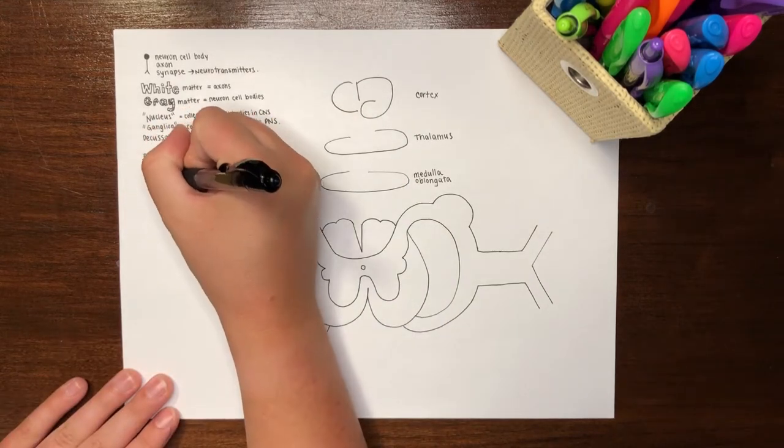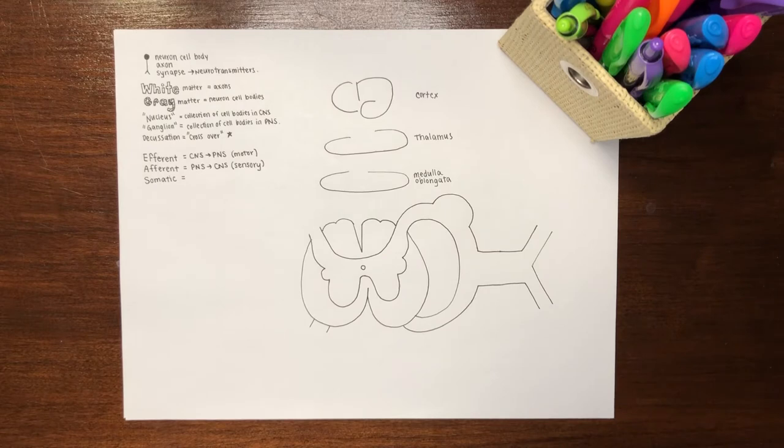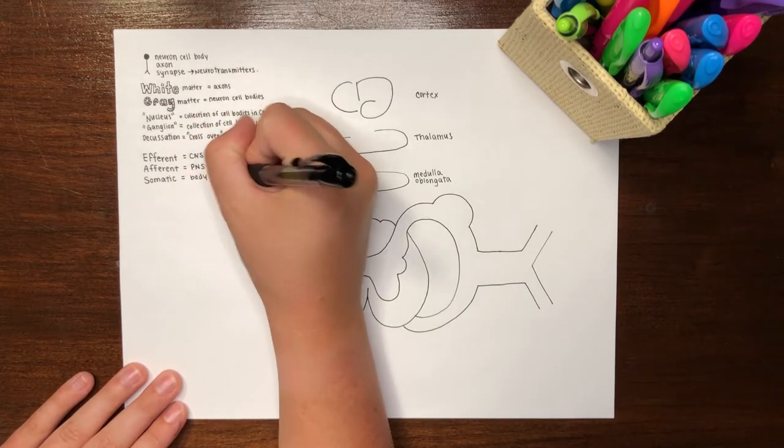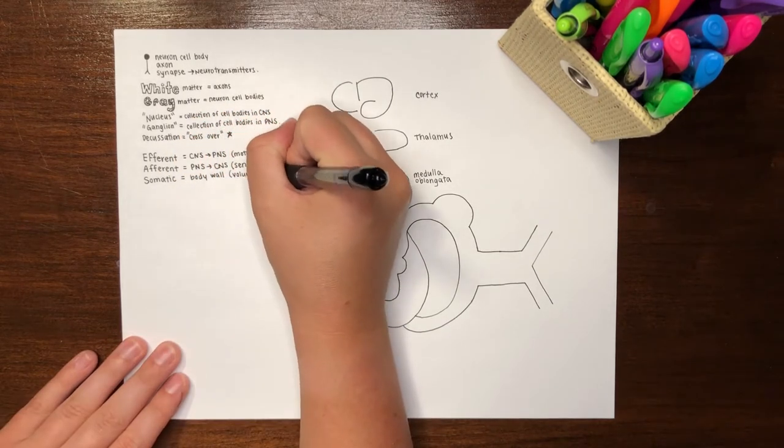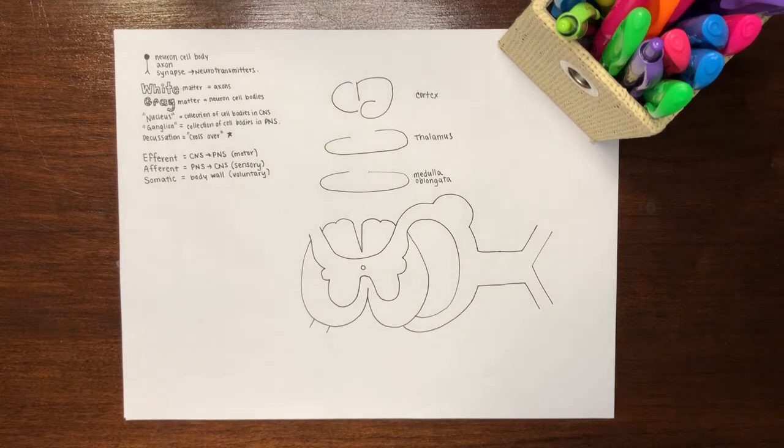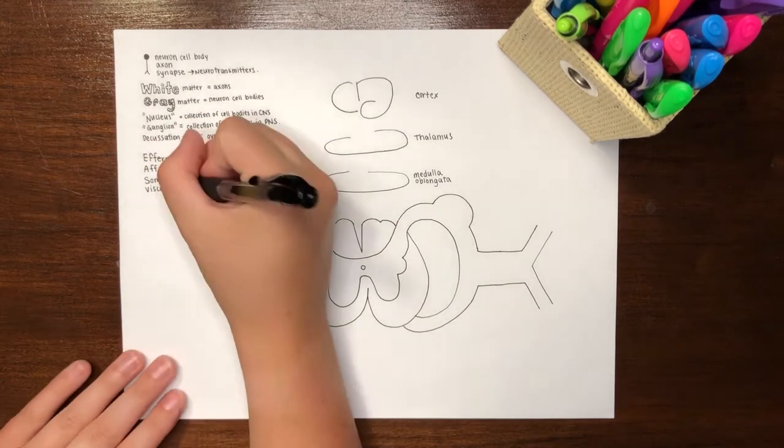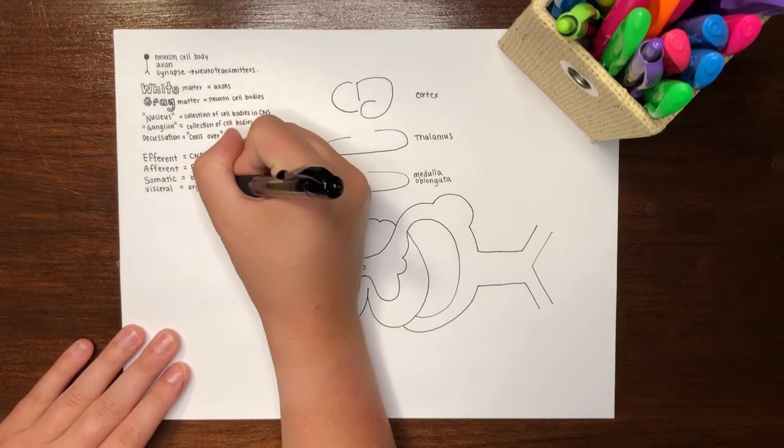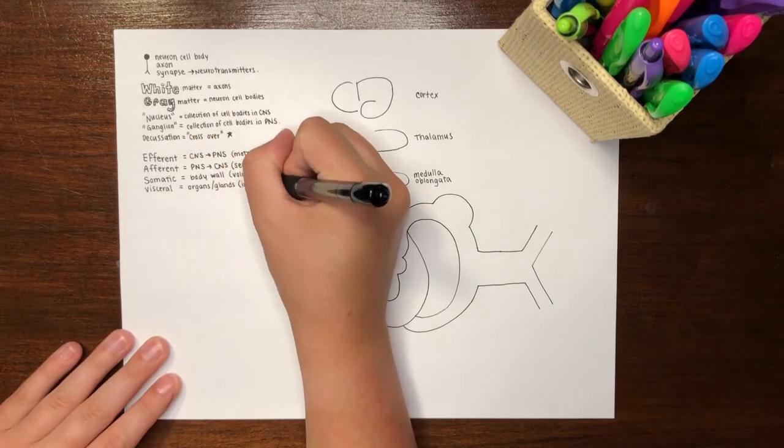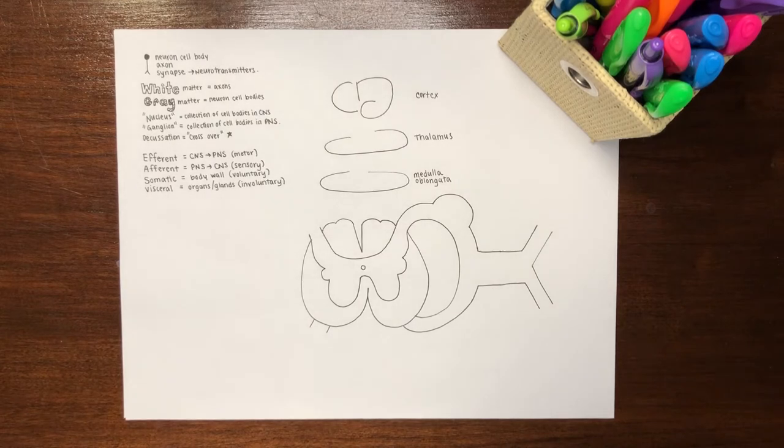The word somatic means relating to the body. In neuroanatomy, somatic describes nervous tissue that innervates or supplies the structures of the body wall. This mainly includes voluntary skeletal muscles. Visceral describes tissues that form organs. This includes involuntary structures like glands, blood vessels, and smooth muscle in organs like the heart, intestines, bladder, and so on. These systems are innervated by the autonomic nervous system, that we will outline in a different video.